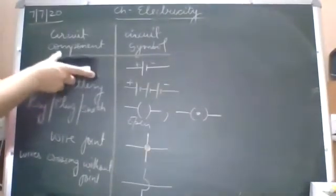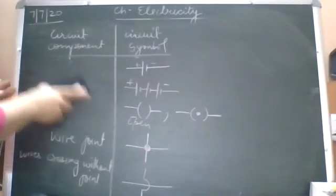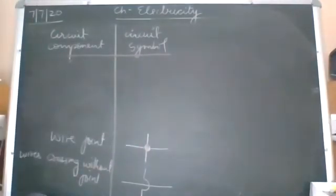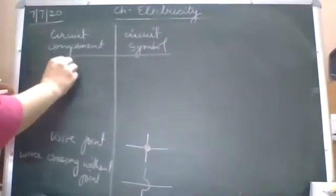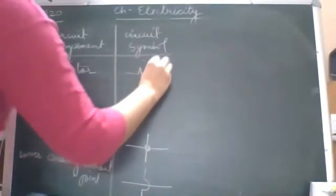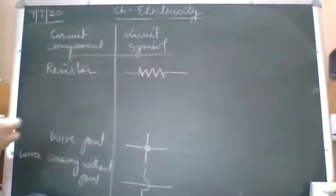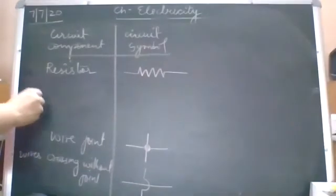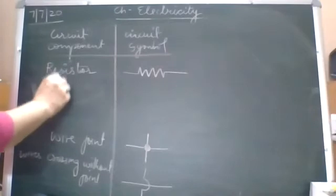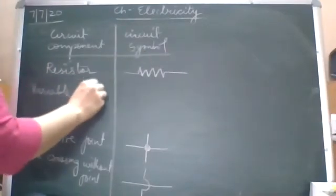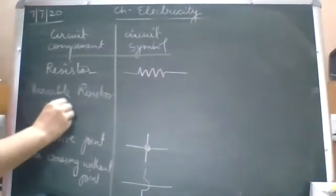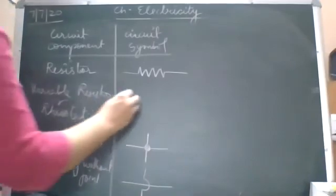Cell, battery, and what we already know. Wire joint was a new introduction. Then comes a resistor — we represent the resistor with a rectangular box symbol. Then comes the variable resistor, also called a rheostat. A fixed-value resistor has a fixed symbol; the variable resistor or rheostat has an arrow indicating the value is varying.